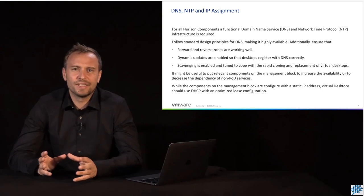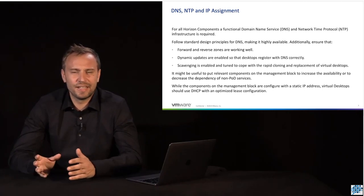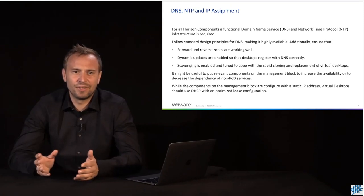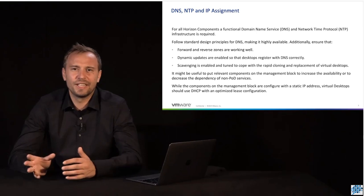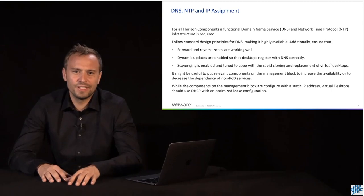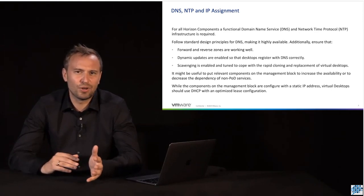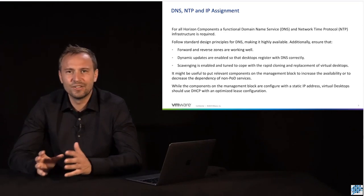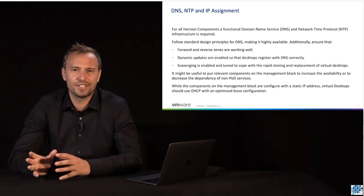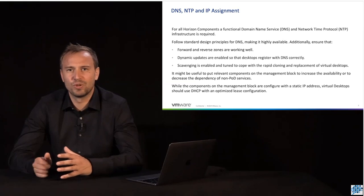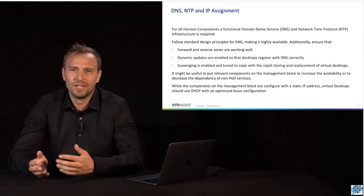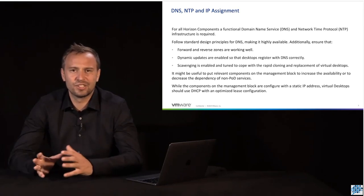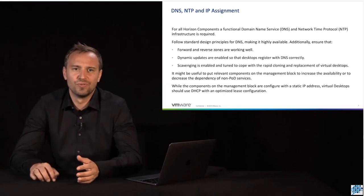It may make sense to place some components on the management cluster within our management block — such as a DNS server or an Active Directory domain controller that includes a DNS service — to reduce dependencies on any non-controllable third-party services. Since we typically use static IP addresses for our Horizon management block components, we recommend using a DHCP server for our virtual desktop networks, with an optimized lease configuration of four to eight hours. This ensures that a fluctuating number of virtual desktops being created and destroyed frequently still have enough IP addresses available, ensuring connectivity from the end user to the virtual desktop.